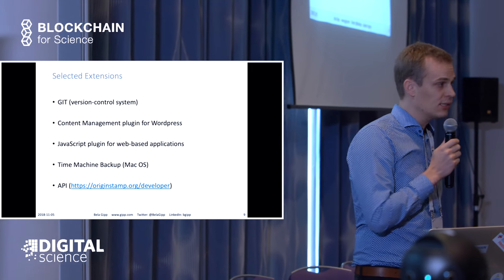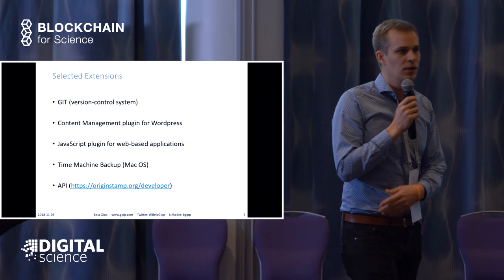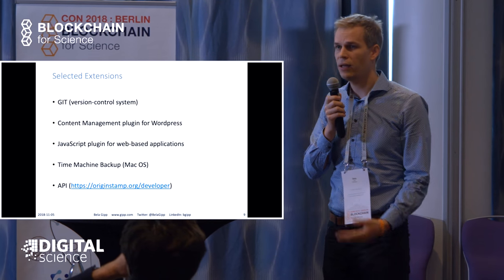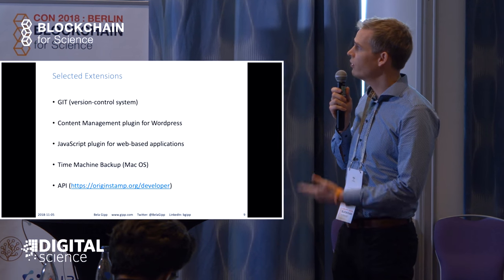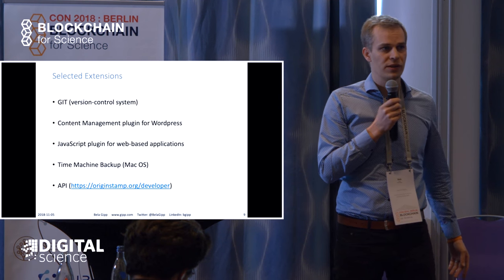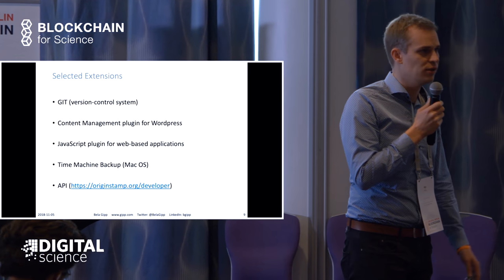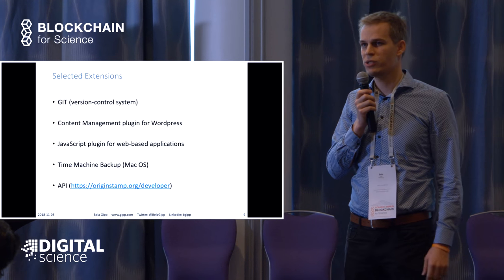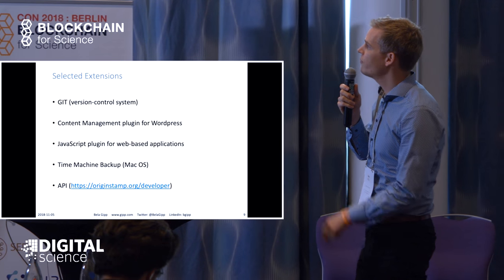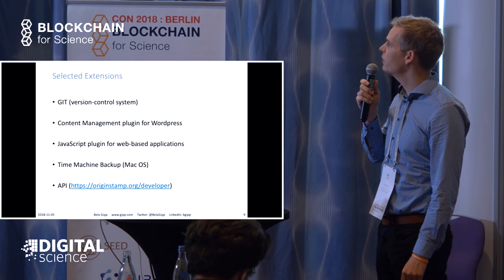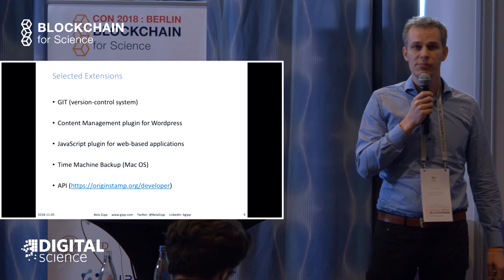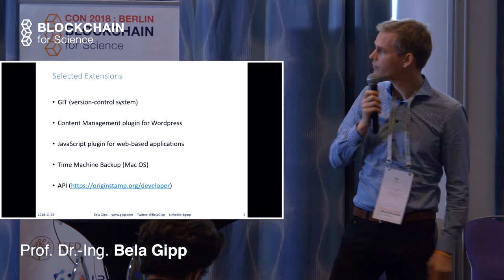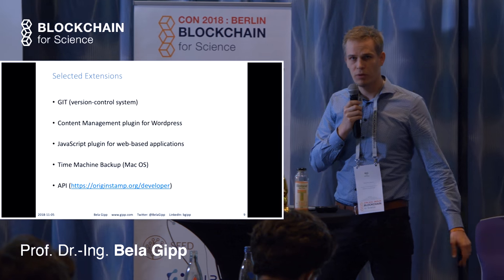We also have extensions you can use for research projects — for example, Git. If you use a version control system, you can timestamp all your source code development. You can use Git not just for source code but also for writing a publication in LaTeX, so you can prove the state of your research on every single day. We have a plugin for WordPress, a JavaScript plugin, backup solutions so you can timestamp the state of your backups, and a free-to-use API for non-commercial purposes.